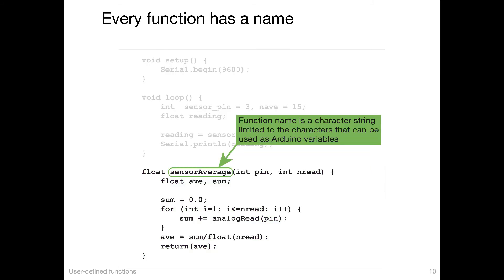Every function has a name. In this case, we're going to call our function sensorAverage. And that function name shows up in the declaration, the very first line of the function. The name of the function has to be a character string. Rules for naming functions are the same as the rules for naming Arduino variables. So use characters, don't use spaces, don't use mathematical operators.